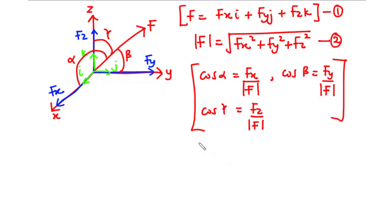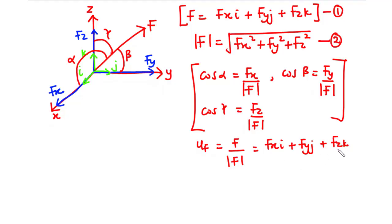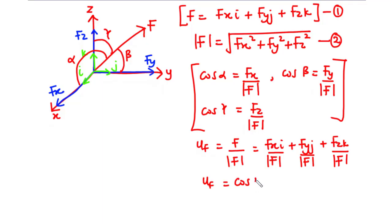If Uf is the unit vector in the direction of the force, then Uf equals the force vector divided by the magnitude of the force vector. Since F can be expressed as Fx·i plus Fy·j plus Fz·k, we divide each term by the magnitude of F. Recognizing that Fx/|F| = cosα, Fy/|F| = cosβ, and Fz/|F| = cosγ, we get Uf = cosα·i plus cosβ·j plus cosγ·k — let's call this equation 3.